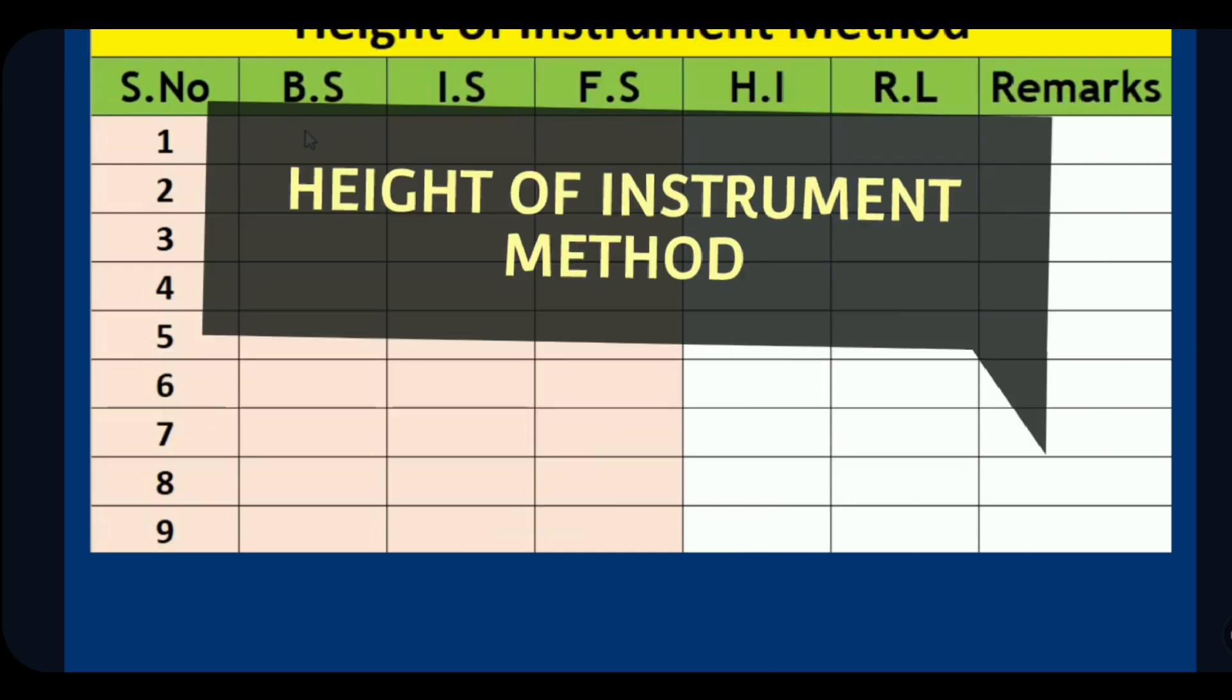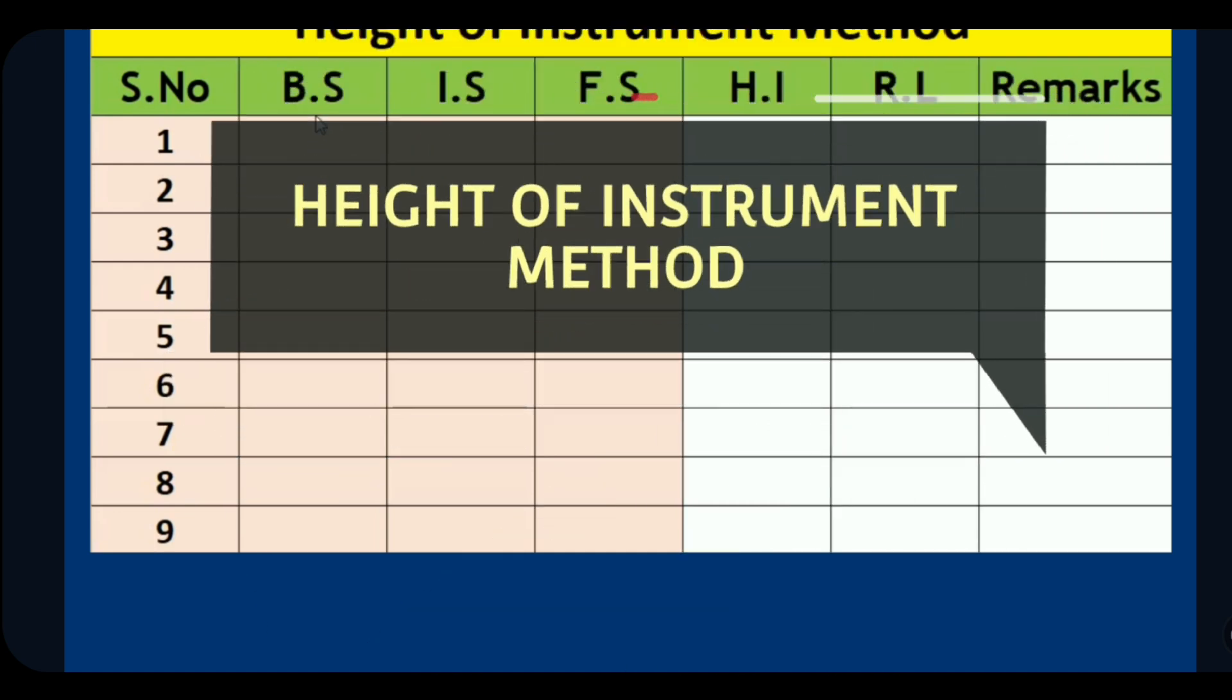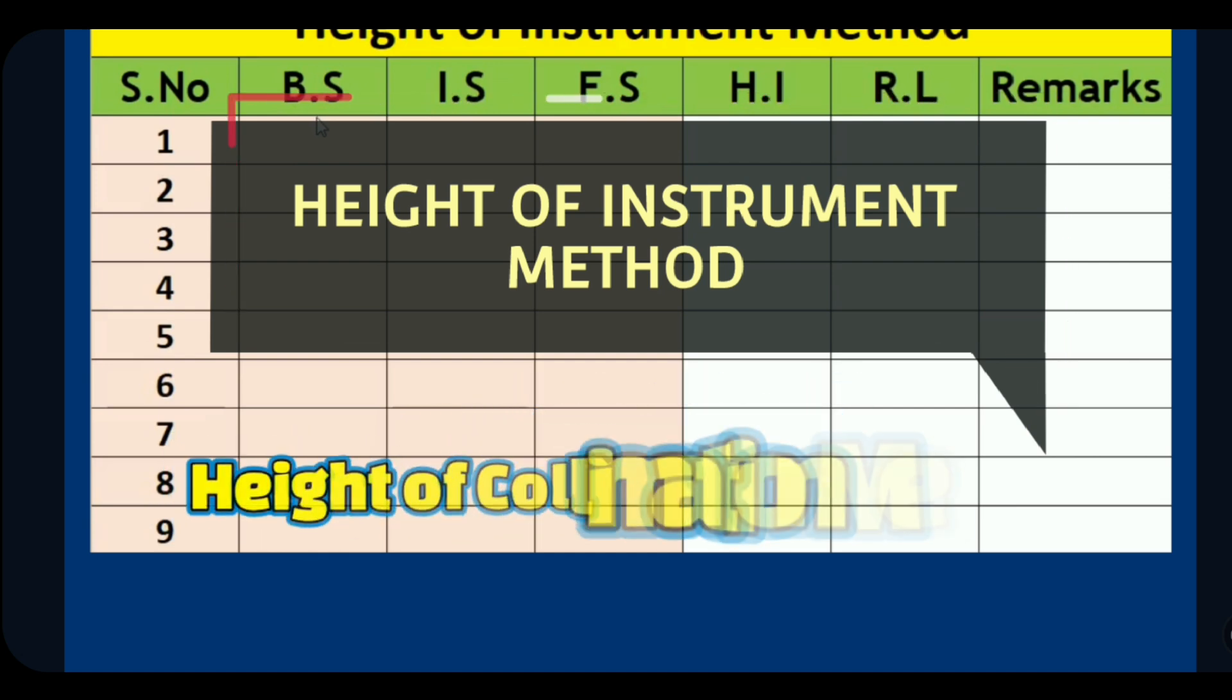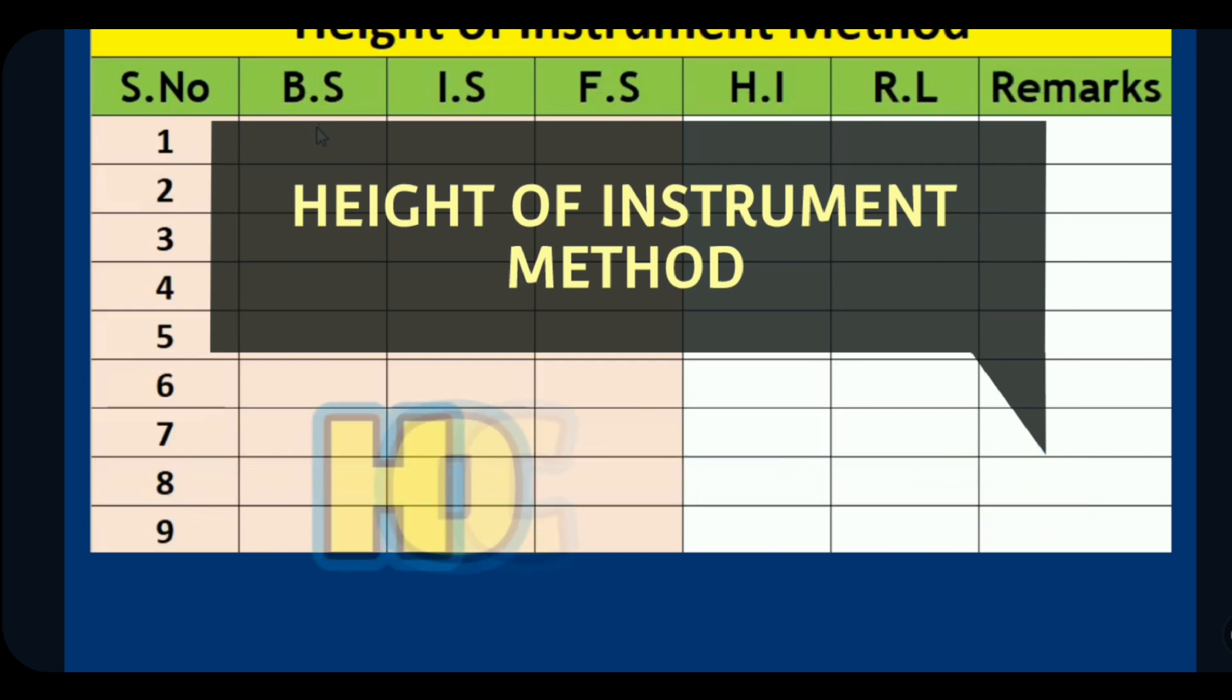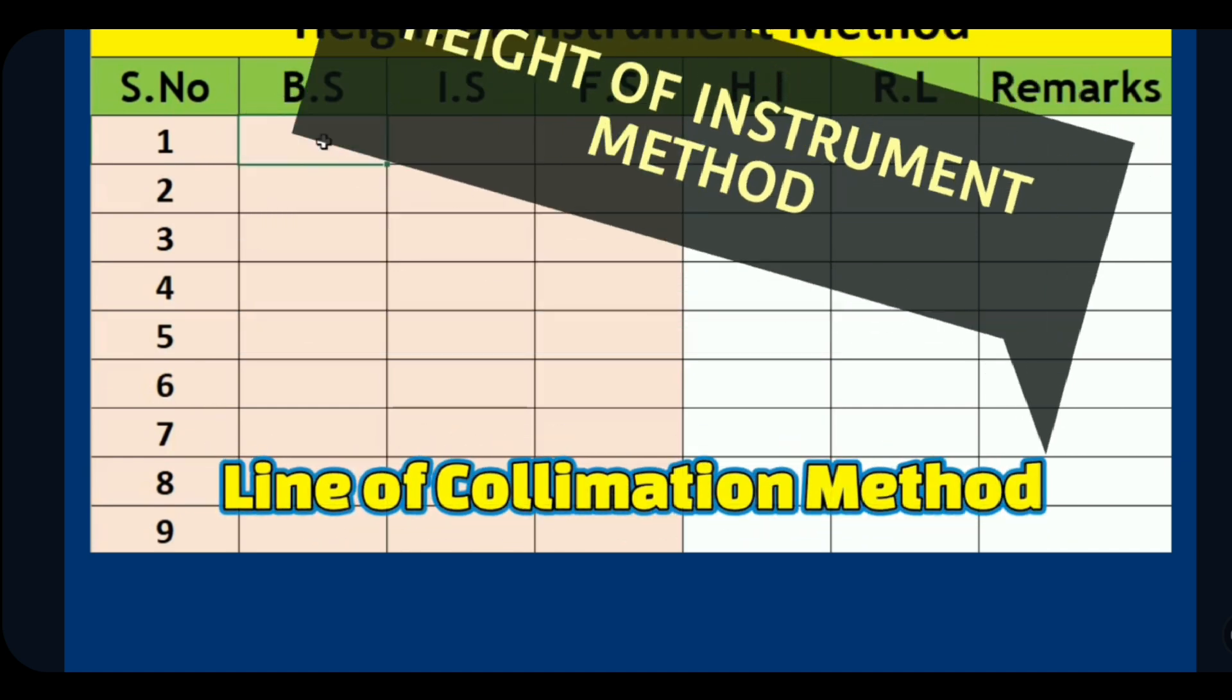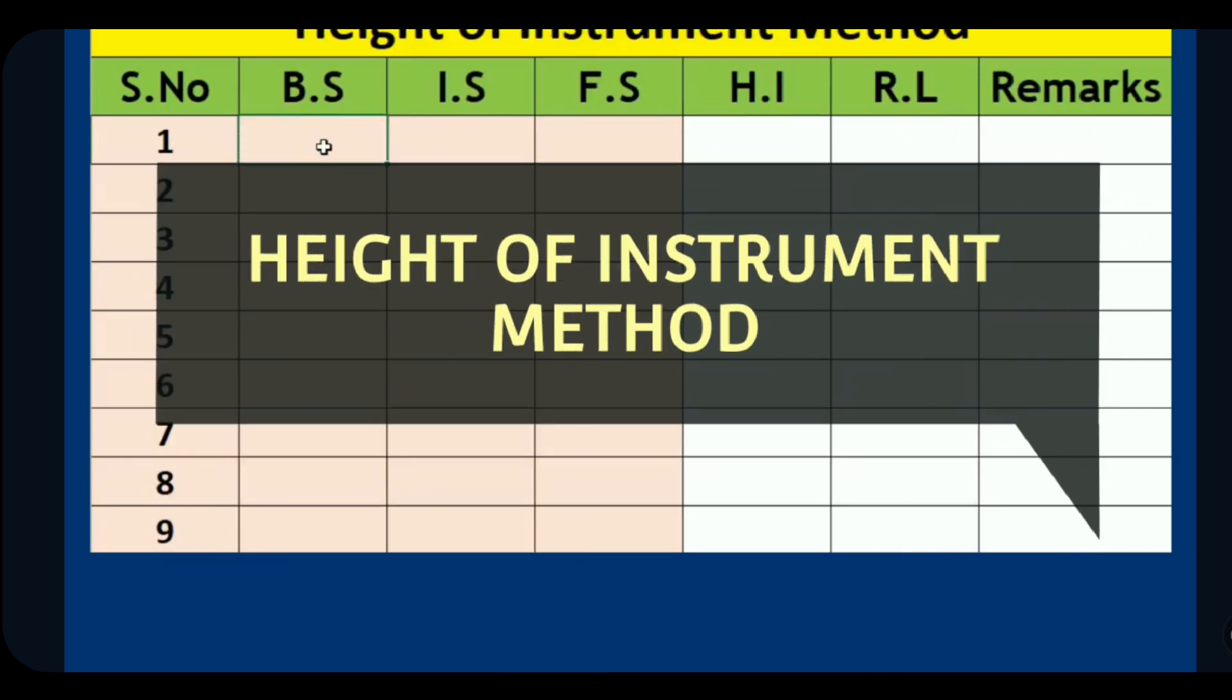Today we are going to learn something that every civil engineer should know: Height of Instrument method. This method is also called HI method, height of collimation method, HOC method, or line of collimation method. So if the question is asked in any of the names mentioned above, use this method.